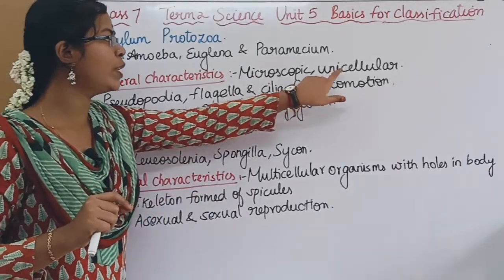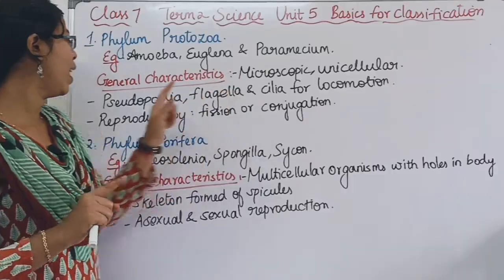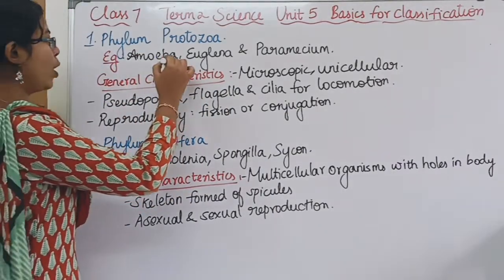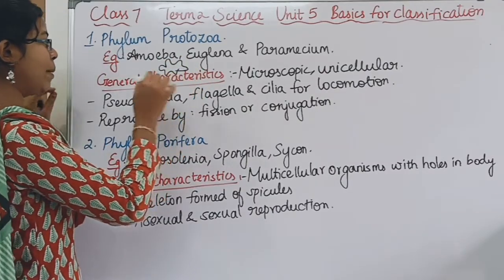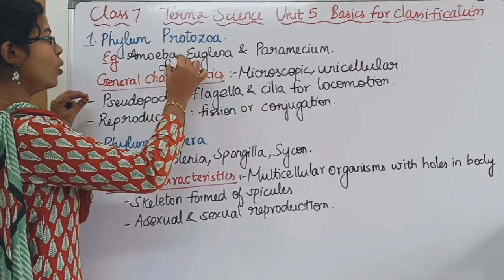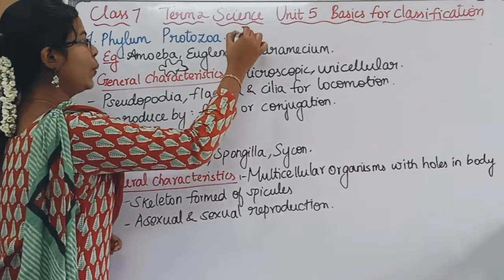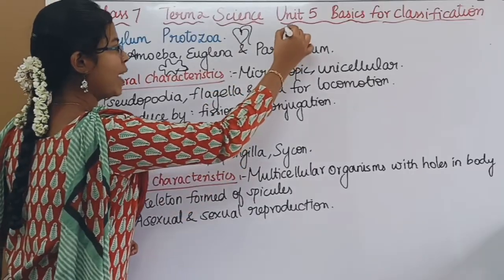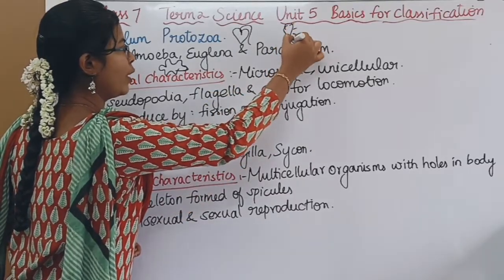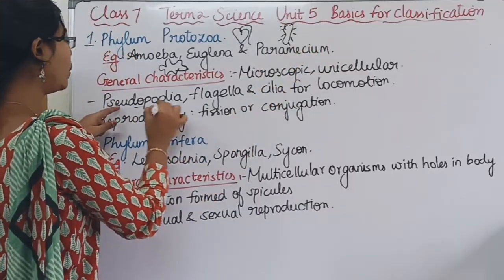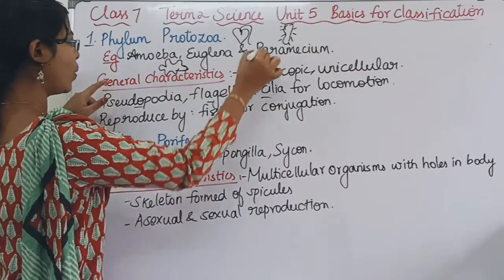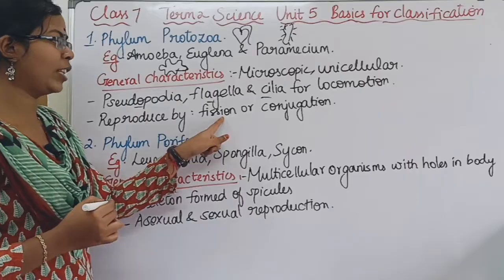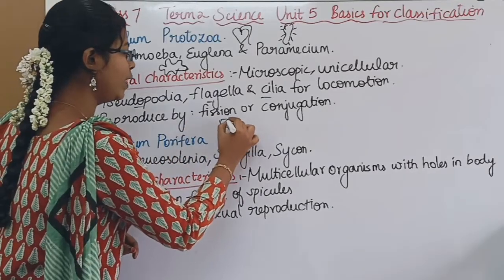Protozoa are unicellular — there is only one cell. Amoeba shows locomotion using pseudopods. For reproduction, the cell is divided: one cell divides into two cells. Conjugation is a form of asexual reproduction.